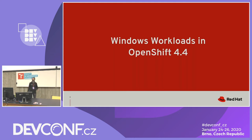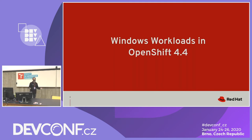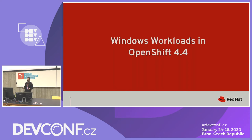The answer is customers. Customers have come and told us they have large Windows applications and large .NET applications they would love to run in OpenShift, because they like what we did with their Linux applications — they were able to manage and orchestrate all of that using OpenShift. They want to do the same for their Windows applications. That's why the Windows Container team was formed within OpenShift.